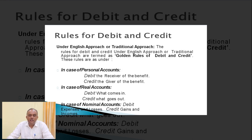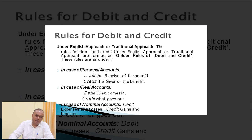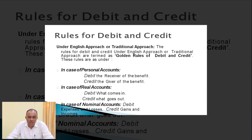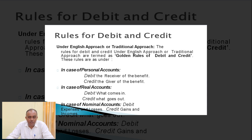Next, what are the rules for debit and credit? In normal practice, debit means debit the receiver of the goods and credit the giver of the goods. As per the English approach, also known as the golden rule, for personal accounts: debit the receiver of the benefit and credit the giver of the benefit. Who receives the benefit will be debited, and who gives the benefit will be credited.